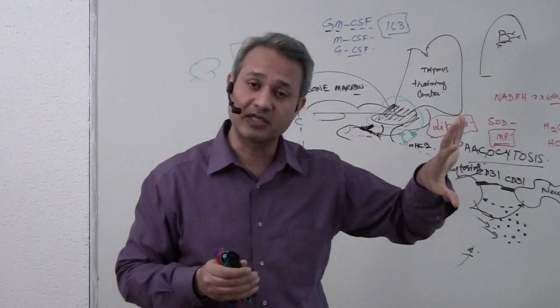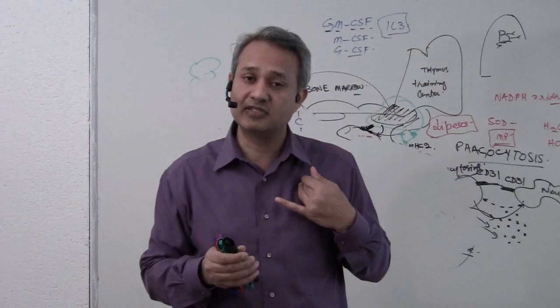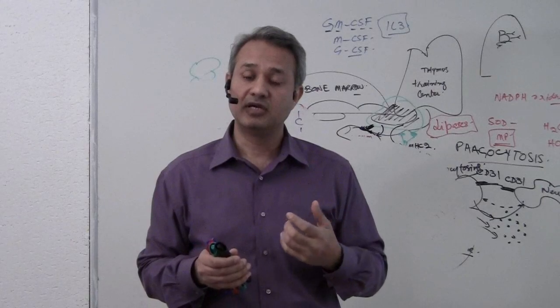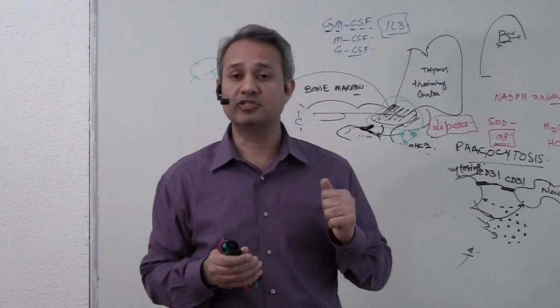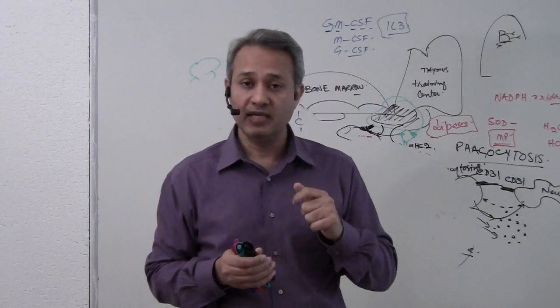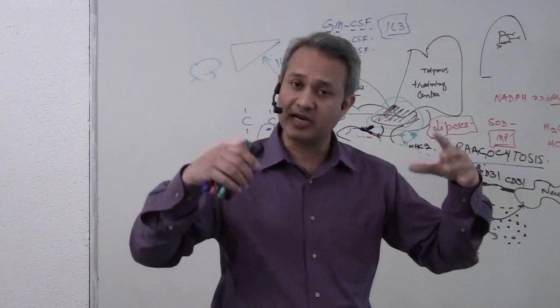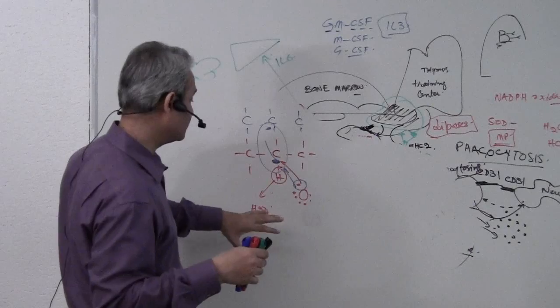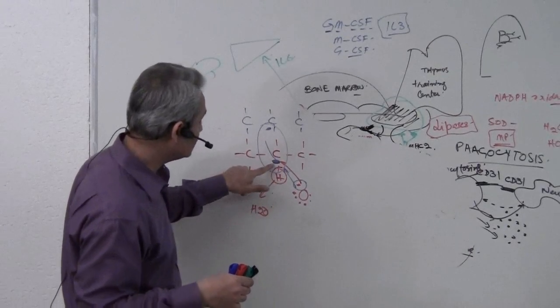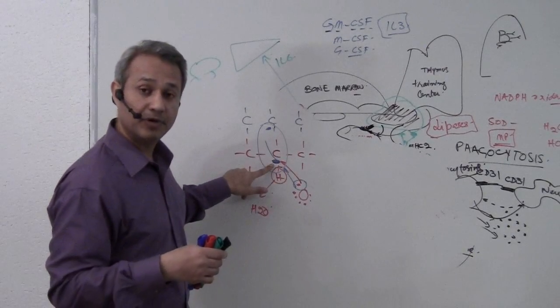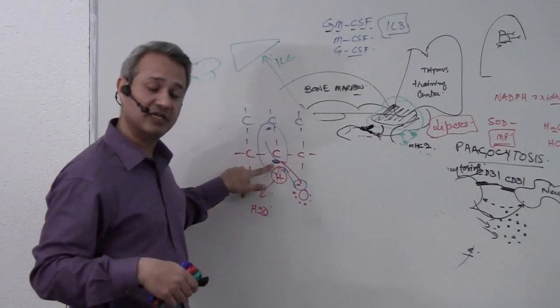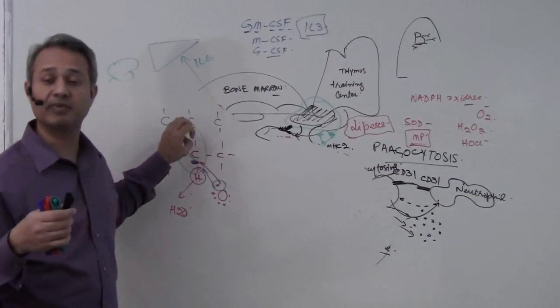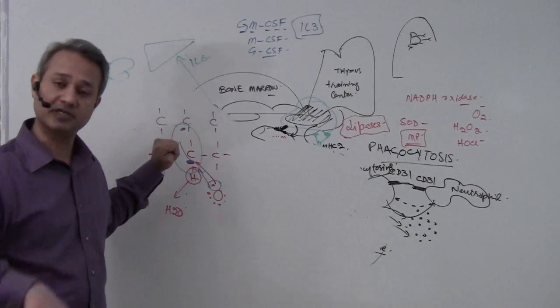Do they do it only to bacteria and pathogens? No, they do it to our cells too. They say that a majority of our aging process is done because of reactive oxygen species. NADPH oxidase system causes a lot of reactive oxygen species to be produced. These reactive oxygen species poured over bacteria cause cell wall damage, cell membrane damage. That's how bacteria is killed.